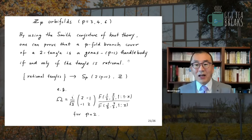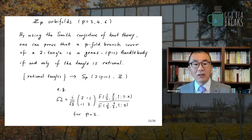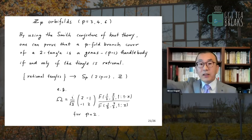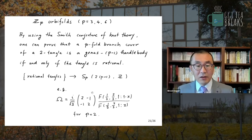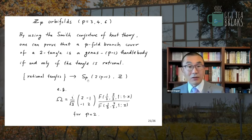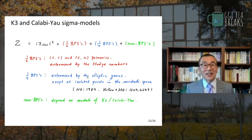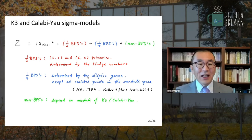You can also generalize to other orbifolds, such as the GP orbifold. This is interesting because you now get a higher genus surface: with a GP orbifold you get a genus-(P-1) handlebody. And again, if and only if the GP vortex gives rise to rational tangle configurations, the correspondence holds. There is a lot of interesting mathematics associated with this.